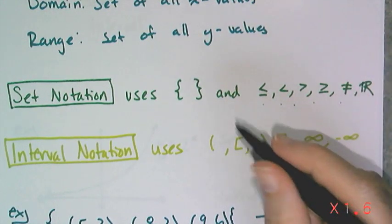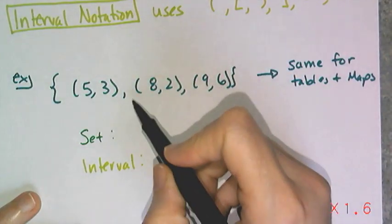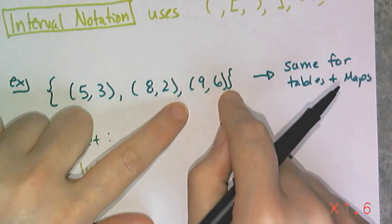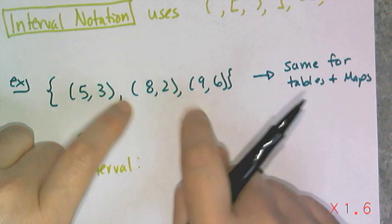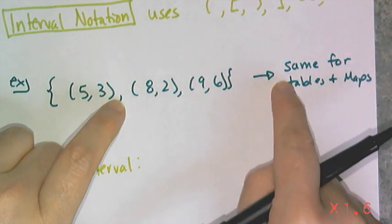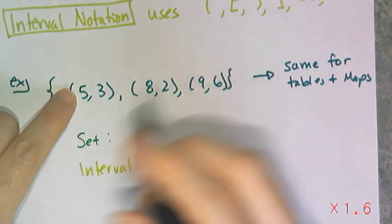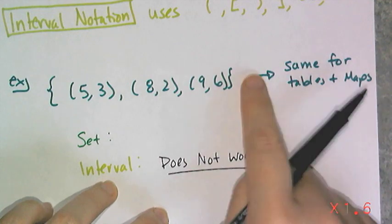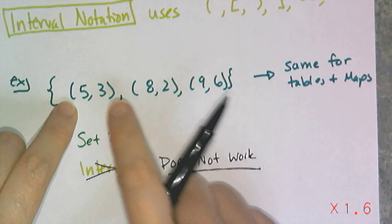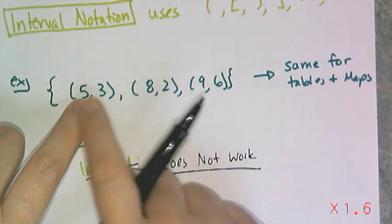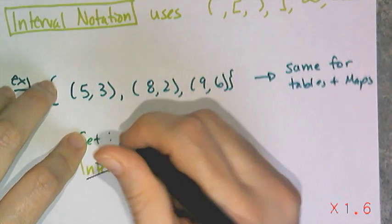I'm going to show you set and interval notation for a bunch of different examples. For our first example, we're going to look at a distinct and finite set of points. What I'm about to show you in terms of how to write the domain and range is going to be the same for tables and mapping diagrams. There's no point in using interval notation for this — the only thing you can use to give domain and range for a set of points, tables, or a mapping diagram is set notation, and it's very straightforward.